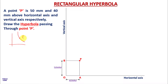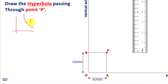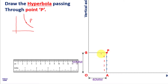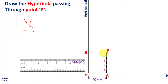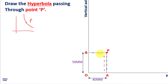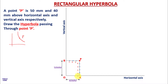So P is 50 mm above the horizontal axis and 40 mm above the vertical axis. Now divide line PA into five equal divisions using a scale, and divide line BP into four equal divisions — giving us points one, two, three, four, five, six, seven. Then extend the BP line horizontally and the AP line vertically up to a suitable measurement.